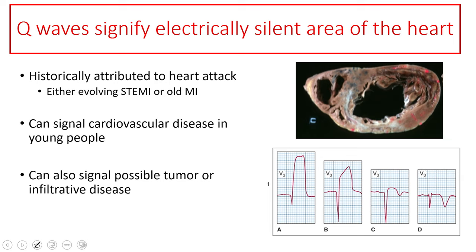So historically, pathologic Q waves have been attributed to an old MI. It can either be acute — as somebody is infarcting, you may start to see those Q waves develop and deepen and start to get wide — or it may signal that something old has happened. Basically, when you see a Q wave, that's just electrically silent muscle tissue. That tissue is dead or unable to conduct electricity. It tells you there's an old infarct. Sometimes it can actually be a cardiac tumor or some sort of infiltrative disease, like a rare disease like sarcoidosis. And I read an interesting study that if you see Q waves in young people, it doesn't necessarily always mean they've had a heart attack, but there was about 90% sensitivity for at least some underlying cardiac disease. So you need to be able to look out for these Q waves because they may signal that something is going on in the heart.